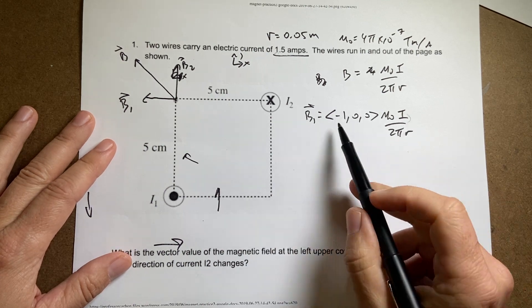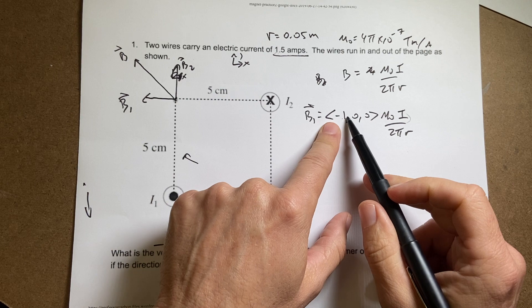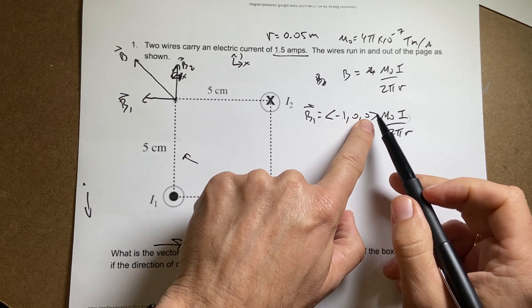And mu naught is 4 pi times 10 to the negative 7th tesla meters per amp. So there, I have an expression for that. Okay, so once I get this number, I multiply it by negative 1, the y and the z components are 0.